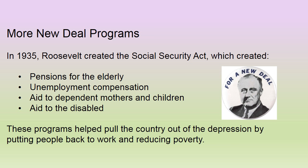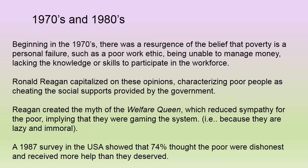Not surprisingly, Franklin Delano Roosevelt is the only president who was elected four times. After his fourth election, Congress passed a constitutional amendment indicating that a president could only be elected twice, because being elected four times became almost a kingship.